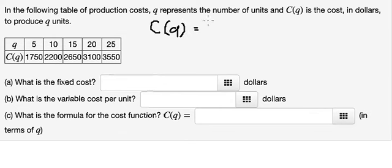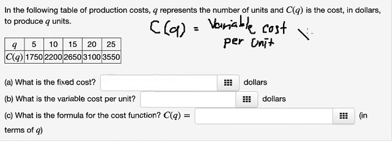We will have the variable cost per unit, multiply by q, plus the fixed cost.